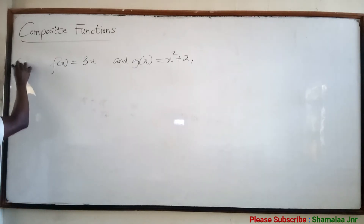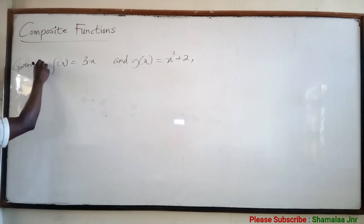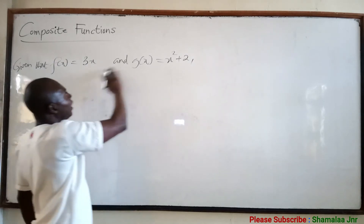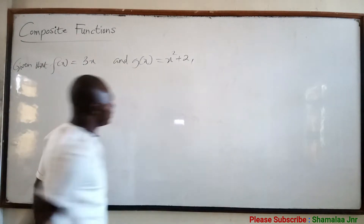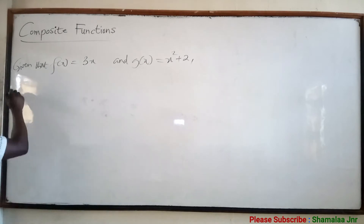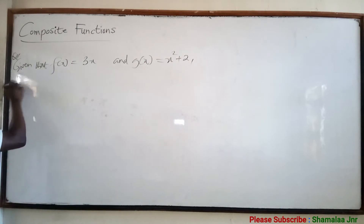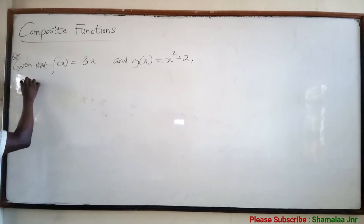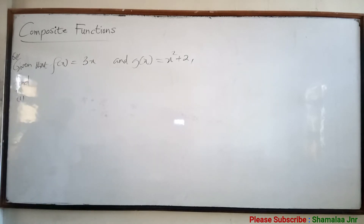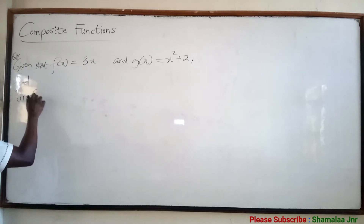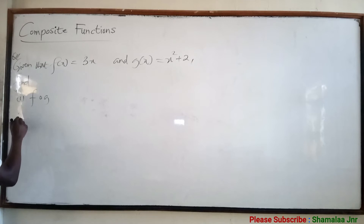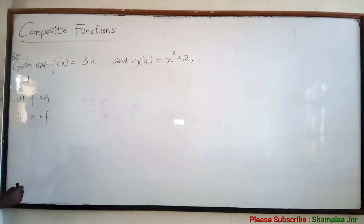Let's look at a question. We are given that f(x) is equal to 3x and g(x) is equal to x squared plus 2. You can be asked to find: (i) f of g, (ii) g of f, (iii) f of g of 2, (iv) g of f of 1, and (v) f dot g.